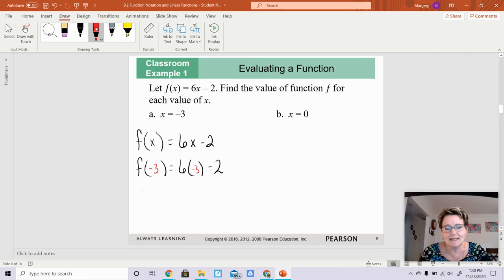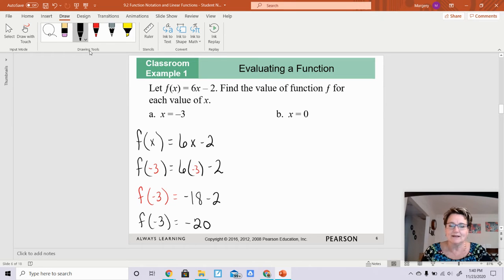So the function of negative 3 is equal to 6 times negative 3, which is negative 18, and then minus 2. So f(negative 3) is equal to negative 20. When you plug in the value x equals negative 3 into that function, you're going to end up with negative 20.